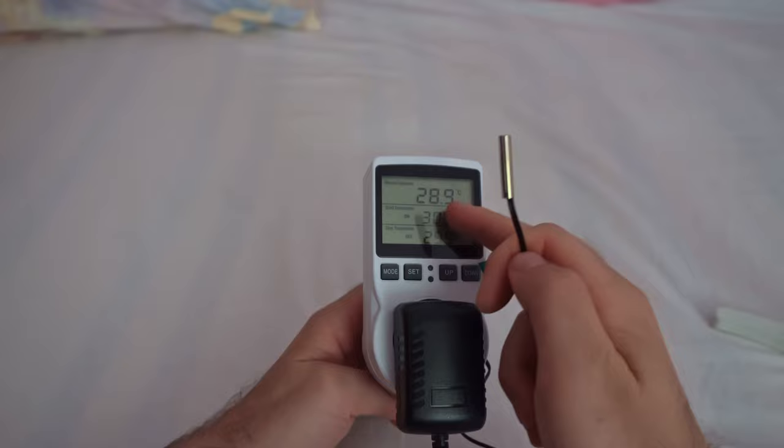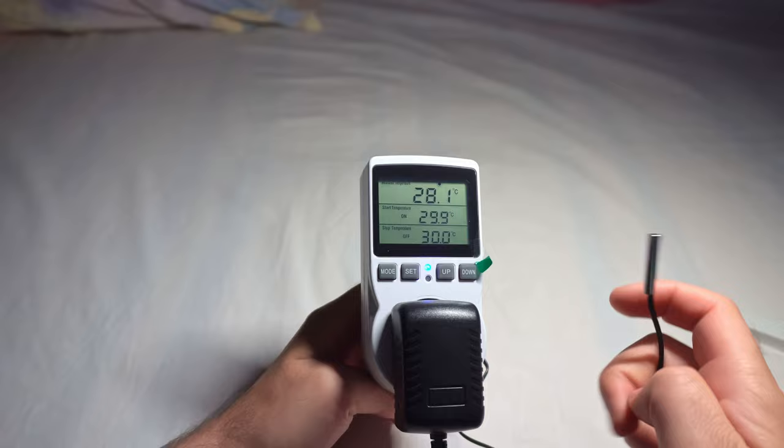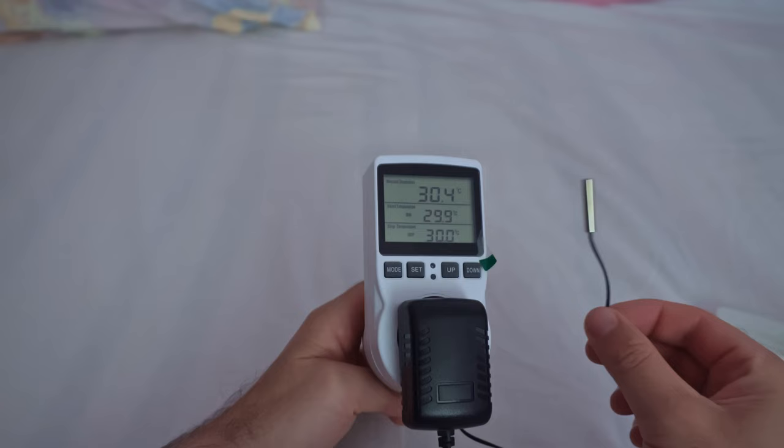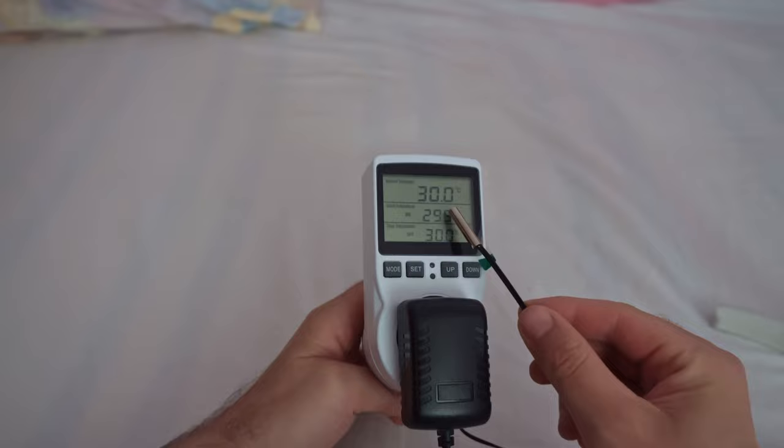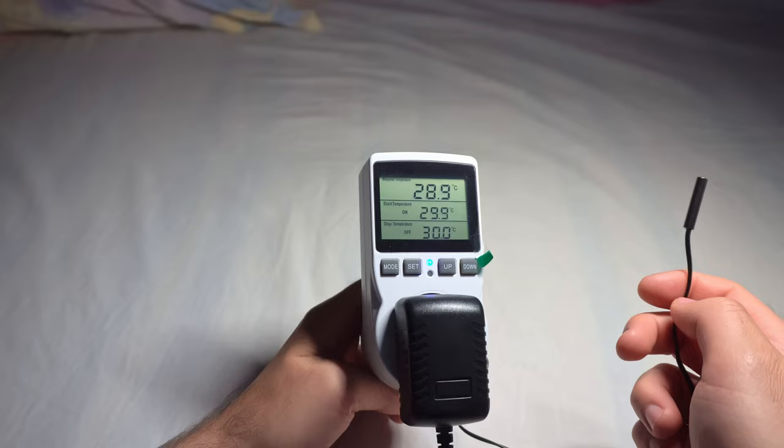So let's set this one to 29, and the other one to 30. And now if I heat it up, when it reaches 30 degrees Celsius, then it powers off. It's off. I'm not heating it anymore. Let it cool down. And when the temperature drops to 29.9, it powers on. So now it's on at lower temperatures and it's off at higher temperatures.